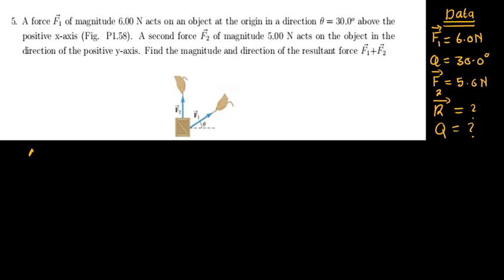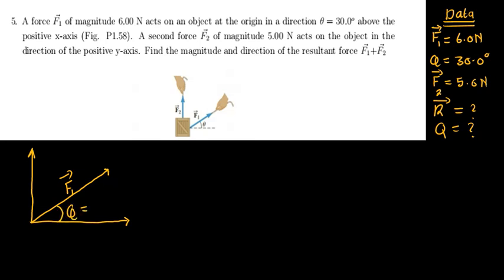When we look at this question, we can draw it properly. We are going to have a line in the positive y-axis, then also a line in the positive x-axis. We are going to have vector F1, and then an angle theta which we are calling 30 degrees. We will have the x-component and also the y-component.